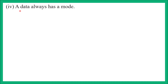Part 4: 'A data always has a mode.' This may not be true — this is false. We can have unique data where not even a single observation repeats even once. So a data does not always have a mode. This is false.